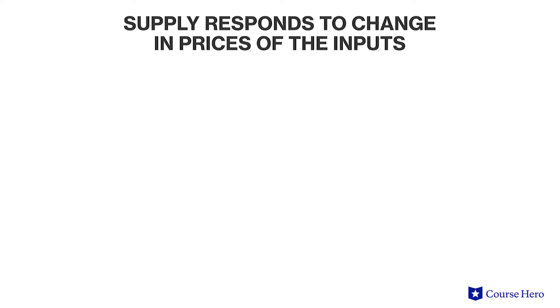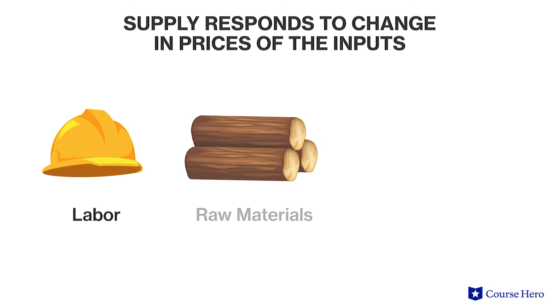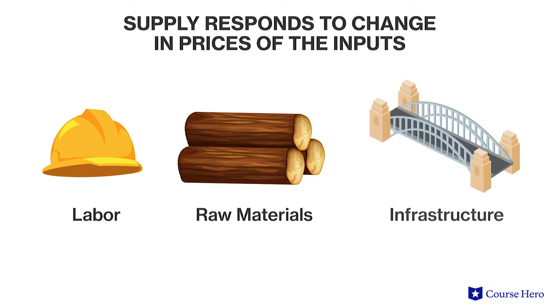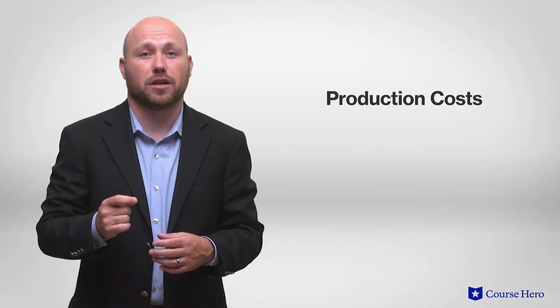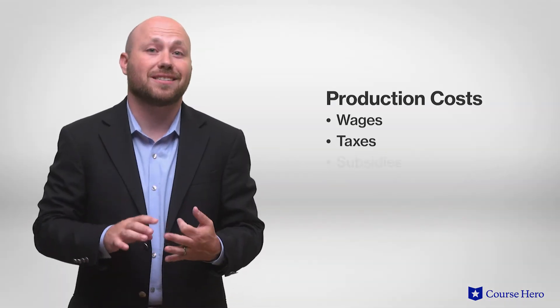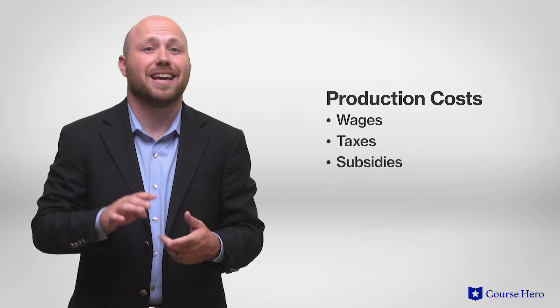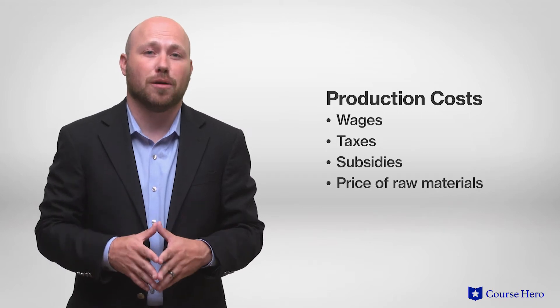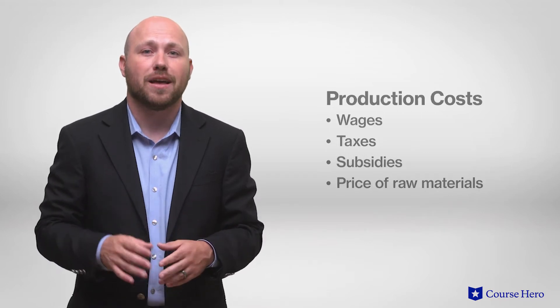In the long run, however, supply responds to changes in prices of the inputs such as labor, raw materials, and infrastructure, which means aggregate supply is affected by production costs, including wages, taxes, subsidies, and the price of raw materials.